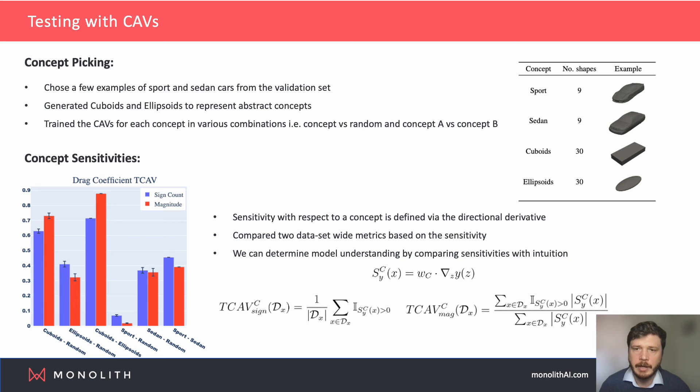Once we have the CAVs, we can calculate the sensitivity of the drag coefficient with respect to a concept by a directional derivative. And by considering the sign or the magnitude of the sensitivity for each shape, we can get a measure of how the presence of a concept affects the downstream model as a whole. In this way, we can use our intuition to determine if the model has properly understood the dataset or if the CAVs are of good quality.